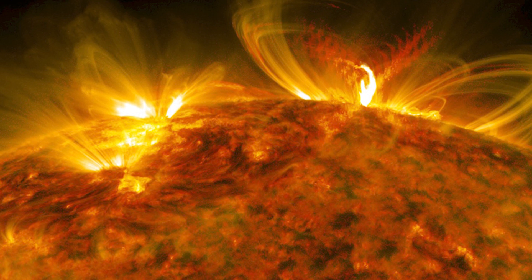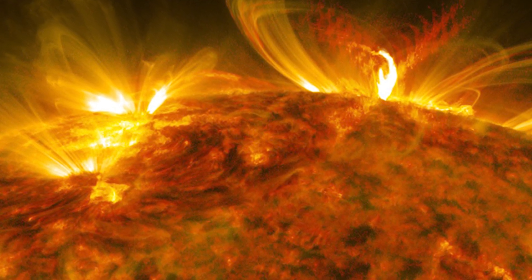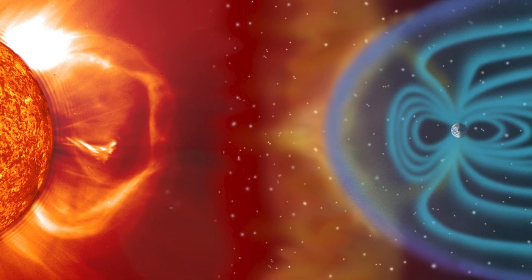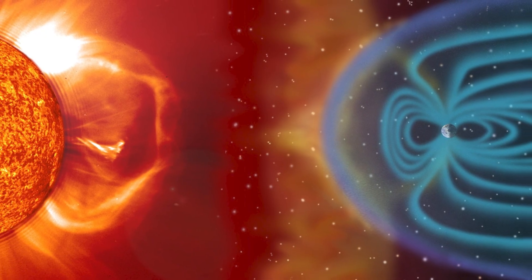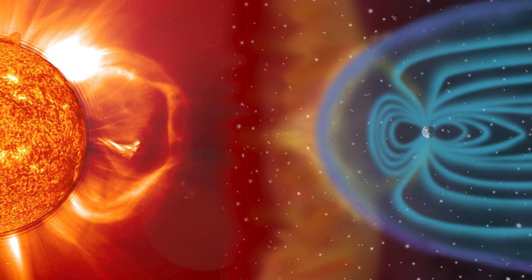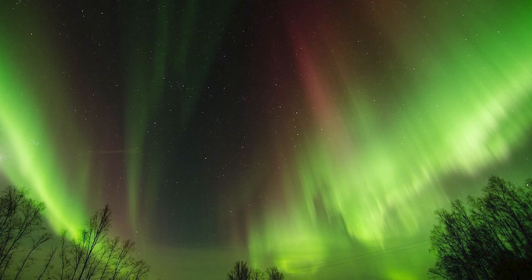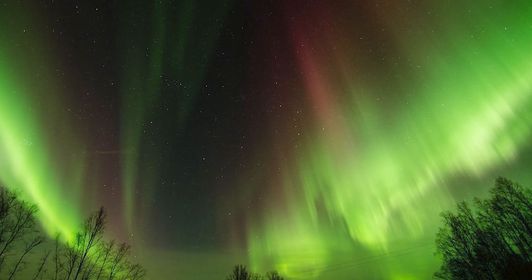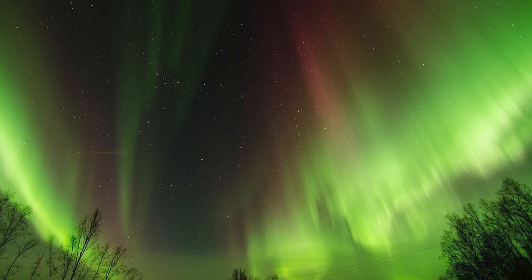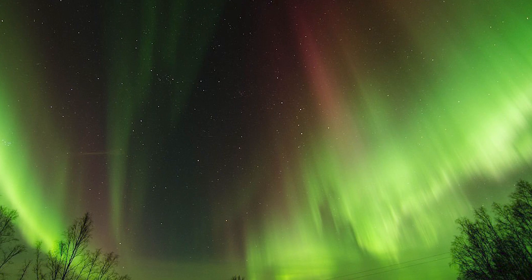A particularly strong storm could induce electrical currents in our power lines, causing widespread blackouts. The Carrington event of 1859, the most powerful geomagnetic storm on record, caused telegraph systems across Europe and North America to fail. Telegraph papers even caught fire. Fast forward to today, and a similar event could be catastrophic, affecting everything from our power grid to satellites and undersea cables, the backbone of our global communication network.